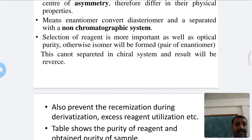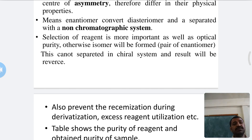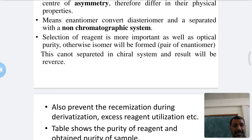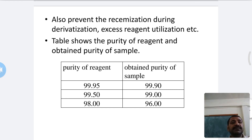The separation reagent must be optically pure; otherwise isomers will be formed. Enantiomeric isomers forming diastereomers that cannot be separated in a chiral system will result in reversed results. Therefore, selection of reagent is critical — it must be optically pure. Also, racemization must be prevented during derivatization.